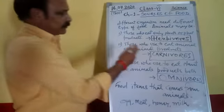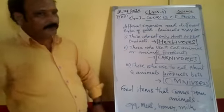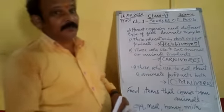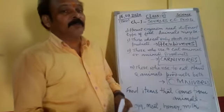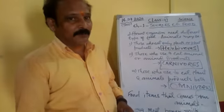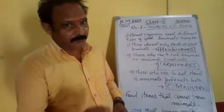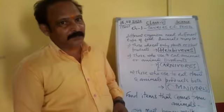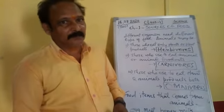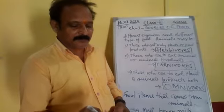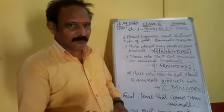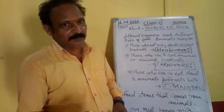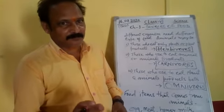These are three types of animals. According to their feeding, according to their food, animals may be of three types: herbivores, carnivores, and omnivores.